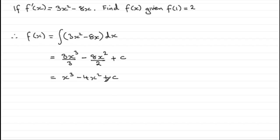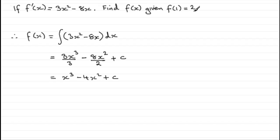So to work out the constant of integration — in this case plus c — we need a fact relating the x to the f(x). And here it is up here: we know that f(1) equals 2.